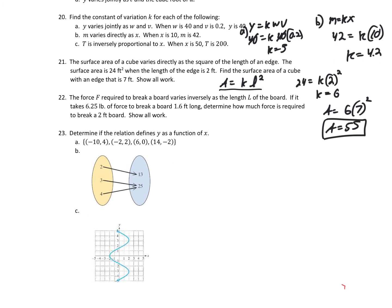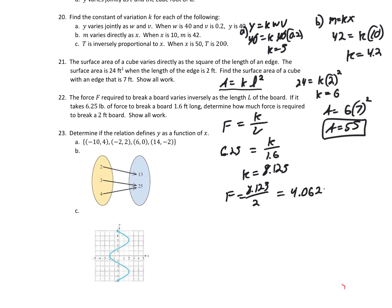For number 22, the force F required to break a board varies inversely as the length L of the board, so F equals K over L. It takes 6.25 pounds to break a board 1.6 feet long, so 6.25 equals K over 1.6, giving K equals 10. Now with a new length of 2 feet: F equals 10 over 2, giving a force of 5 pounds.